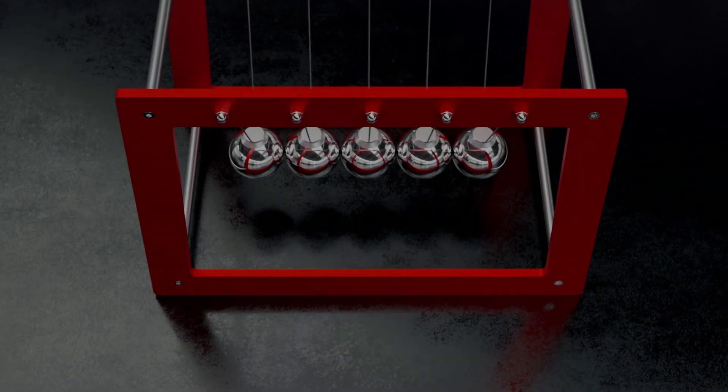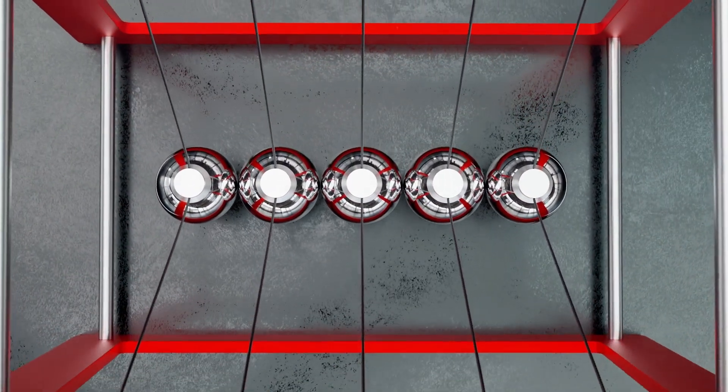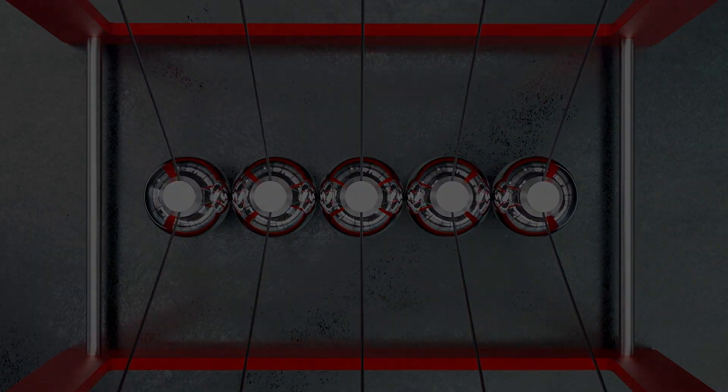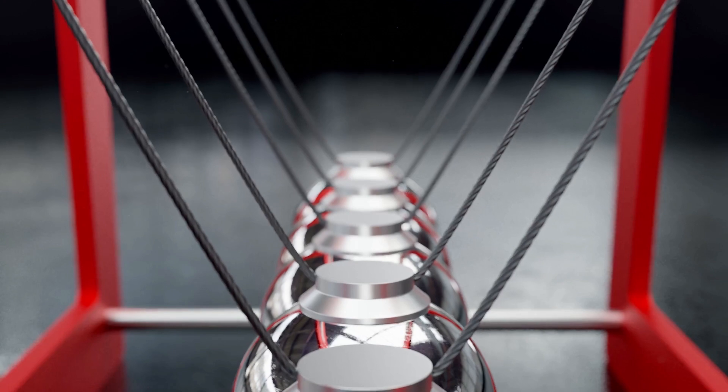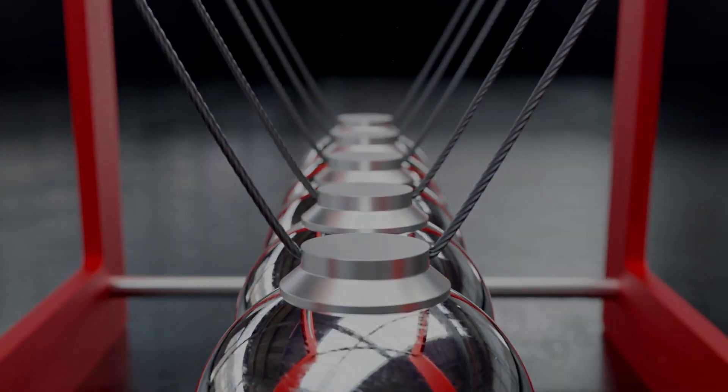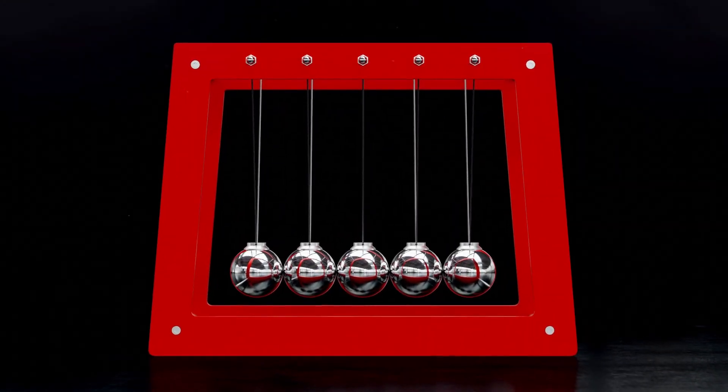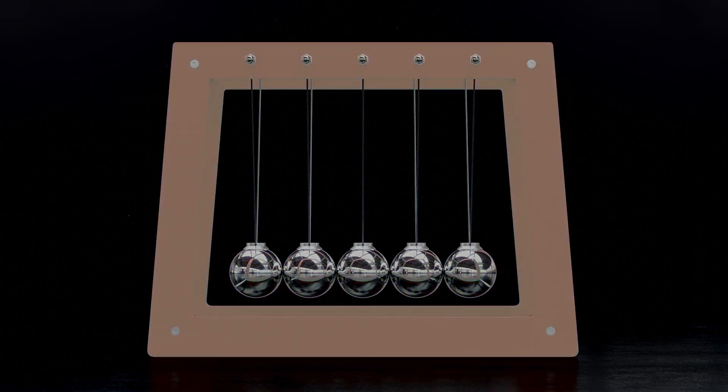The Newton's Cradle is a device that demonstrates the conservation of momentum and the conservation of energy with swinging spheres. The device is named after English scientist Sir Isaac Newton. A typical Newton's Cradle consists of identical metal balls suspended in a metal frame.